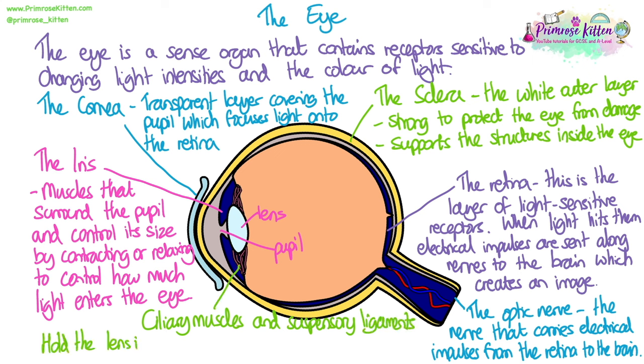The ciliary muscles and the suspensory ligaments hold the lens in place and control its shape so they can focus the light.